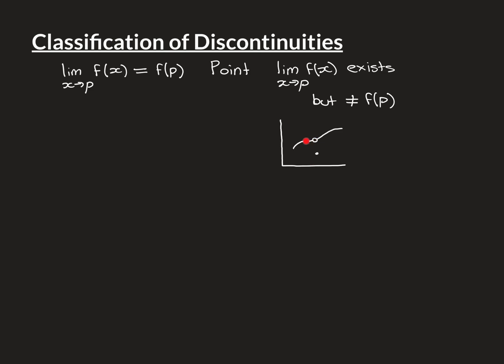You can see that the limit as x approaches P is the value where the hole is in the graph, but the value of the function at P is somewhere else — as though it's been snatched out and placed down elsewhere. When that happens, we say there is a point discontinuity at P.